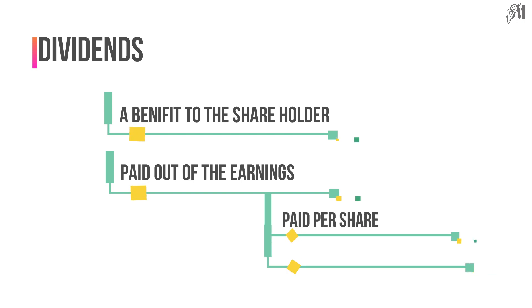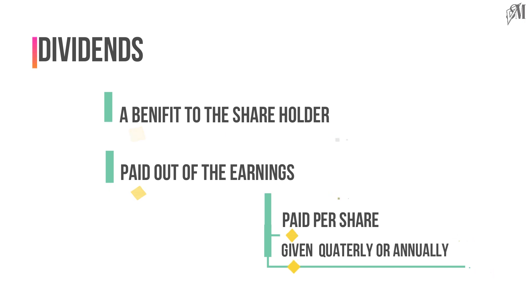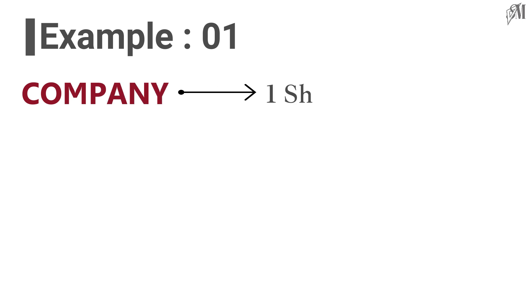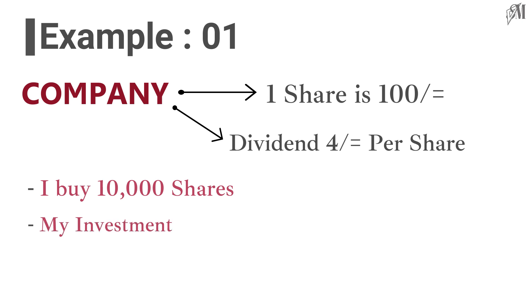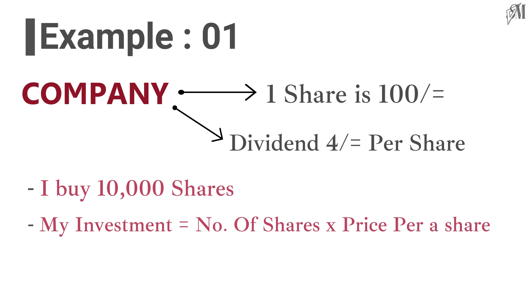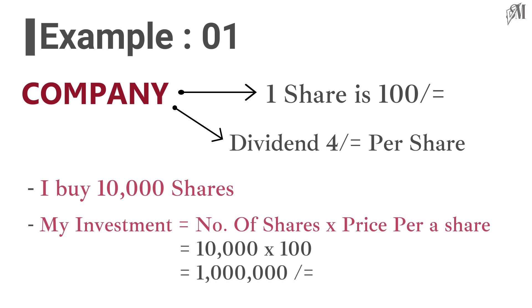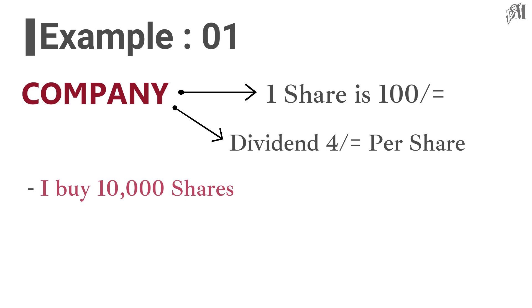Now let us look into an example. A company sells a share at 100 rupees and pays a dividend of 4 rupees per share. If I buy 10,000 shares, my investment can be found by multiplying the number of shares by the price of a share: 10,000 × 100 = 1,000,000 rupees.